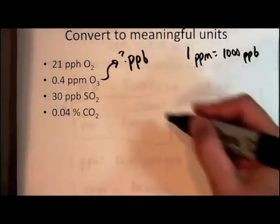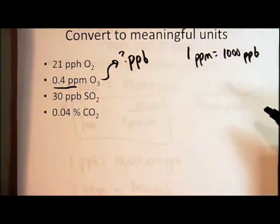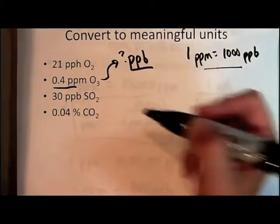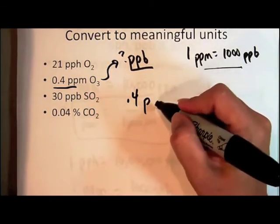So what I can do is just start with what's given, the unit of 0.4 parts per million, and convert to the unit that I want which is parts per billion using this expressed as a unit factor. So I'm going to start with what's given, 0.4 parts per million.